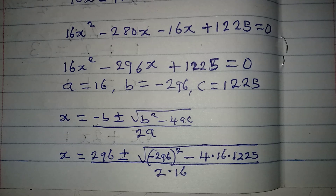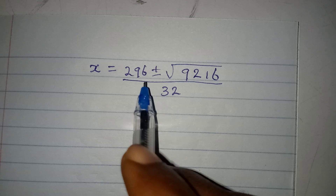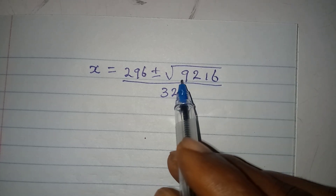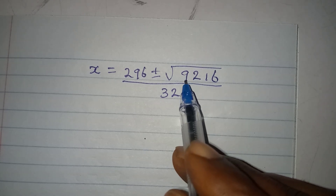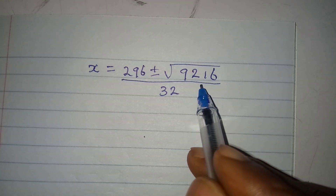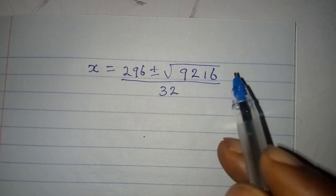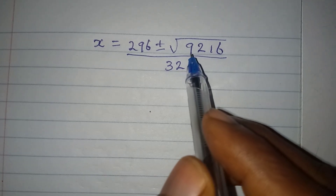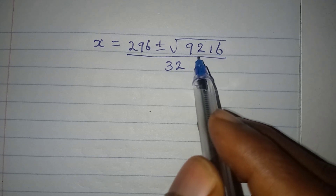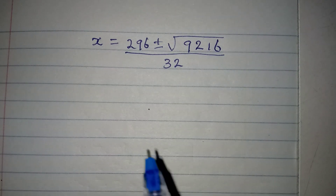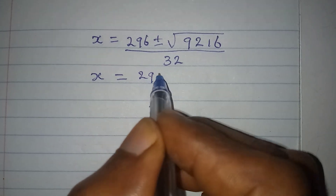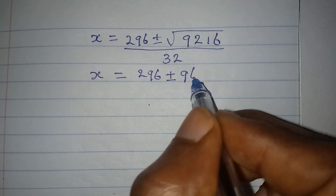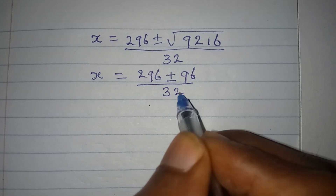Under the square root: 296² gives 87616, and 4 times 16 times 1225 gives 78400. Subtracting gives 9216. So we have 296 plus or minus the square root of 9216, and the square root of 9216 is 96. This is all over 32.